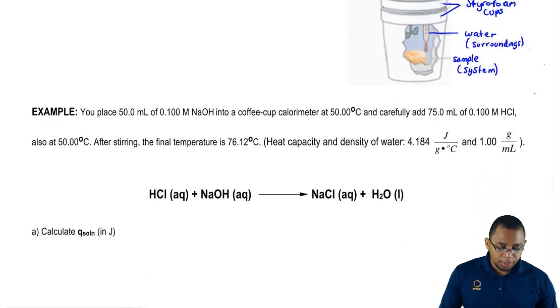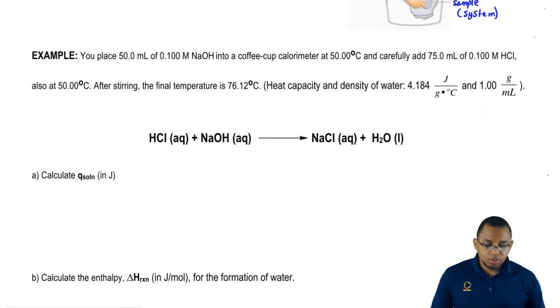Now let's take a look at this example question. Here it says you place 50 mL of 0.100 molar NaOH into a coffee cup calorimeter at 50 degrees Celsius and carefully add 75 mL of 0.100 molar hydrochloric acid also at 50 degrees Celsius.